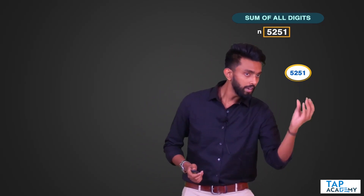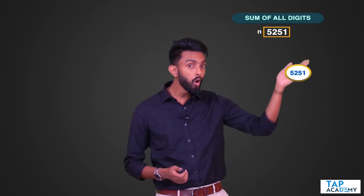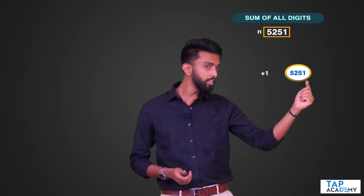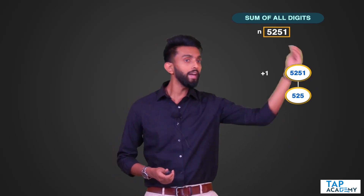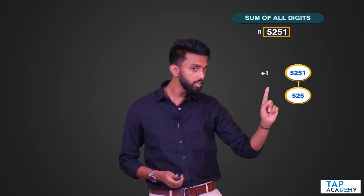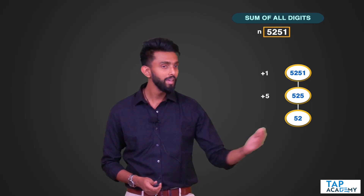I'll write a recursive function. The first time I call it, I pass n. To break it into a smaller problem, I remove the last digit and call the same function again, keeping the last digit aside to add later. So for 5251: keep 1 aside, call the function on 525; keep 5 aside, call on 52; keep 2 aside, call on 5.